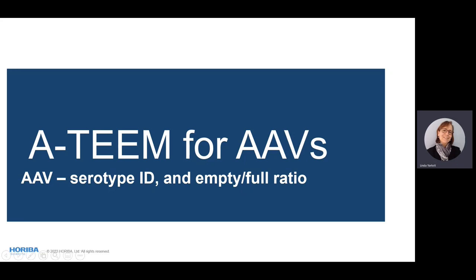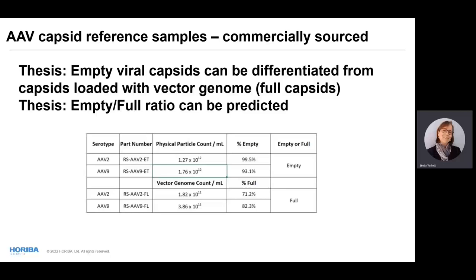Based on our successes, we decided to do something more challenging. We wanted to see if we could use A-TEAM to characterize AAVs — adeno-associated viruses — which are used as a viral vector to deliver gene therapies, as well as vaccines and other therapies. We were interested in knowing whether A-TEAM was capable of differentiating the empty-full ratio, which is a critical quality attribute for AAV manufacturing, and also able to differentiate between AAV serotypes.